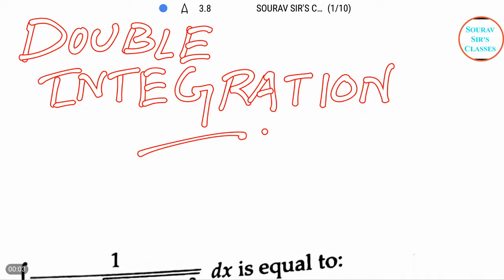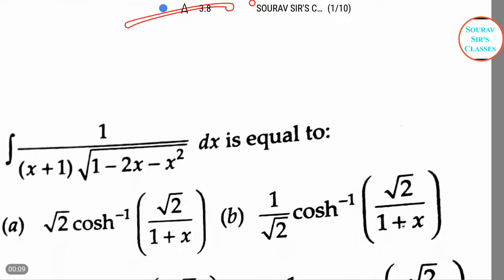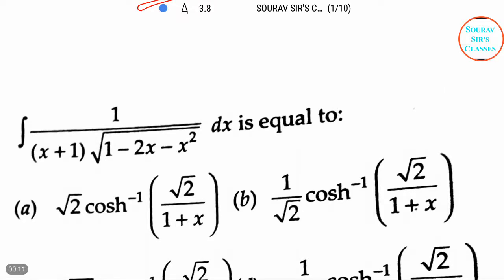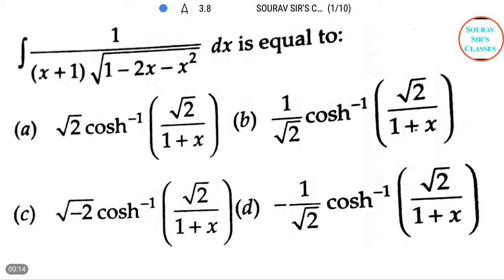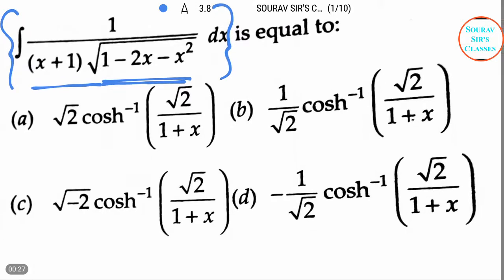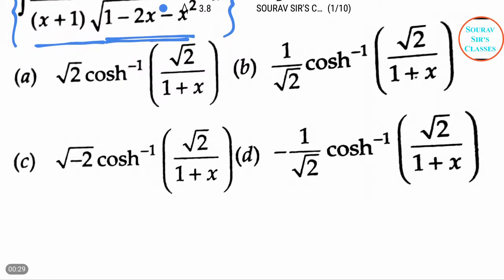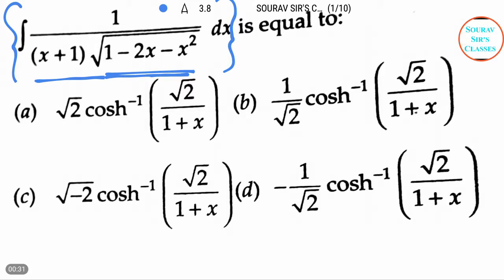Hello students, welcome to Sorosa Classes. Today our topic is double integration and here some questions are given, so let's solve these questions. Our first question is integration of 1 by (x+1) root over (1 minus 2x minus x squared) dx. We have to find the value of this part, and four options are given; after solving we will choose the correct option.